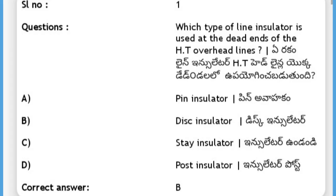Which type of line insulator is used at the dead ends of HT overhead lines? Options: Pin insulator, disc insulator, stay insulator, post insulator. The answer is B, disc insulator.